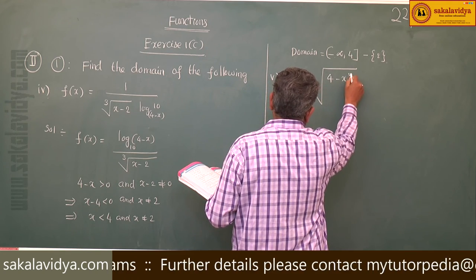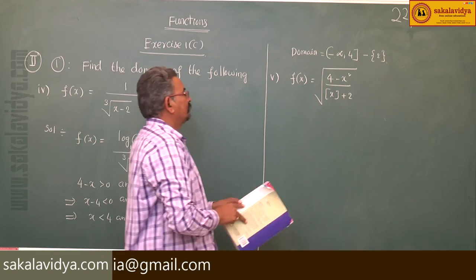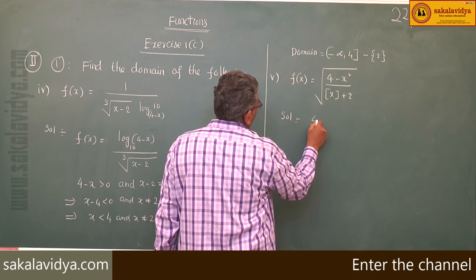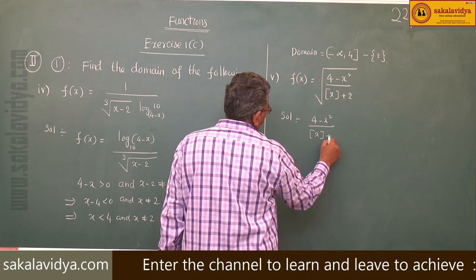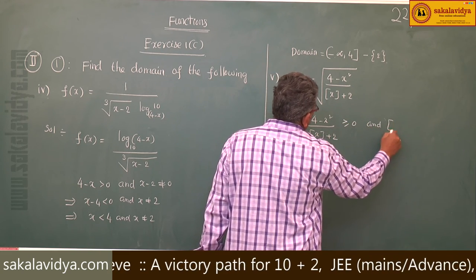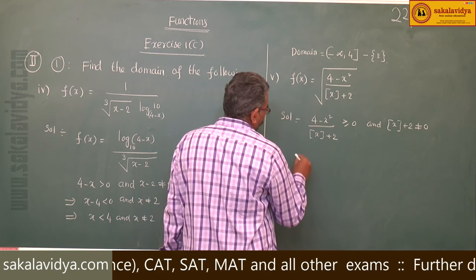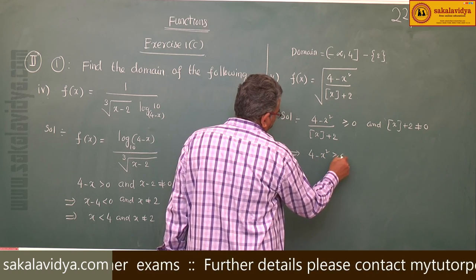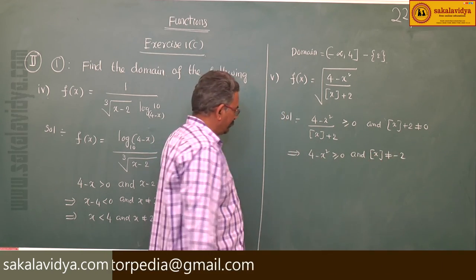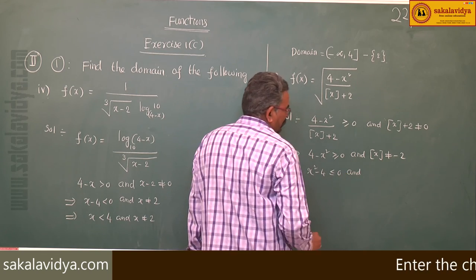Fifth one: f(x) is equal to root over (4 minus x squared) divided by floor(x plus 2). Here, for f(x) to be defined, (4 minus x squared) divided by floor(x plus 2) must be greater than or equal to 0, and floor(x plus 2) does not equal to 0. So 4 minus x squared greater than or equal to 0, which means x squared minus 4 less than or equal to 0, and floor(x) does not equal to minus 2.